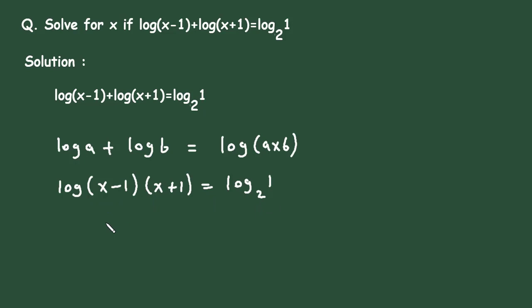Now for this there is one more formula. We know that (a+b) into (a-b) is equal to a square minus b square. So here if we put this formula, it will be log(x² - 1²) is equal to log 1 to the base 2.